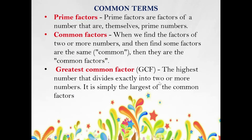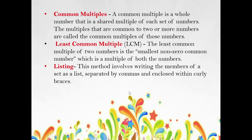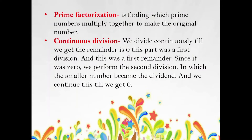So we have here common terms: prime factors, common factors, greatest common factor, common multiples, least common multiple, listing, prime factorization, and continuous division. We'll discuss all of those today, one by one — how to find or how to get each of those common terms.